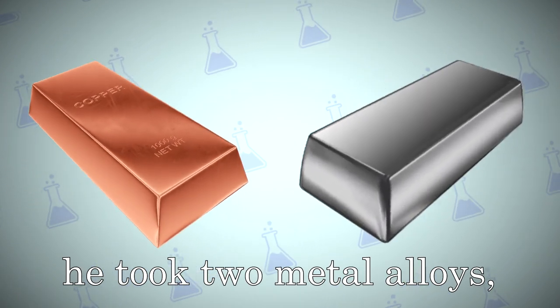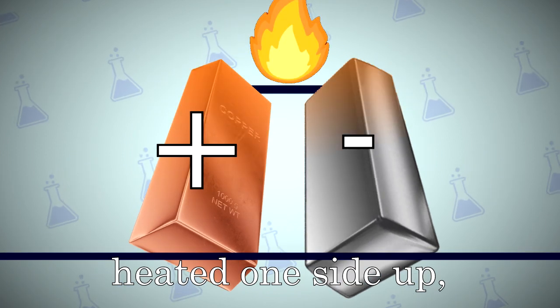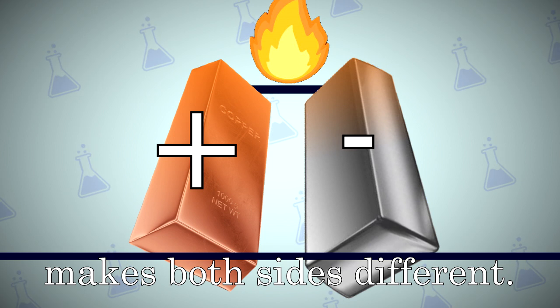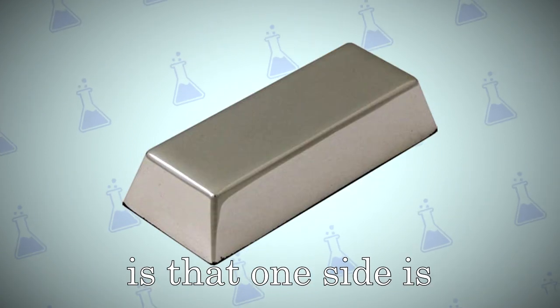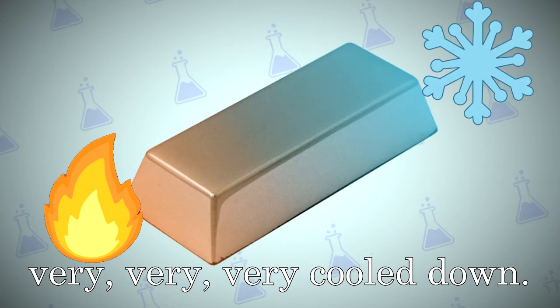He took two metal alloys, one with a lot of electrons and one with less, duct taped them together, heated one side up, and realized that the heat makes both sides different. The way that these sides are different is that one side is very heated up, while one side is very cooled down.